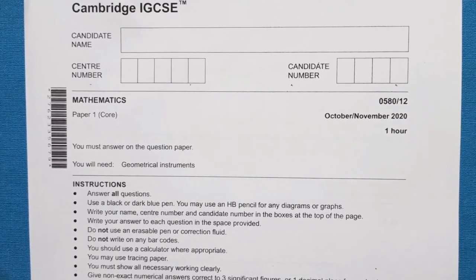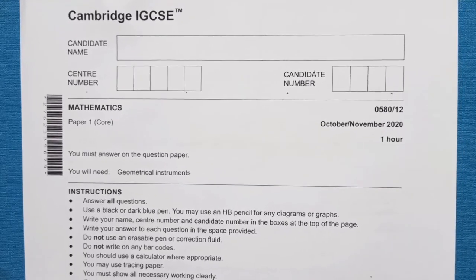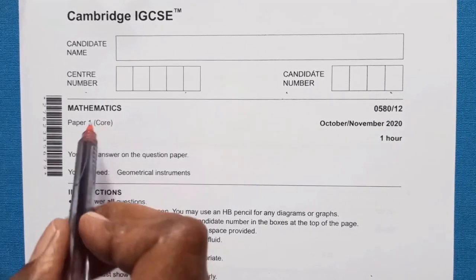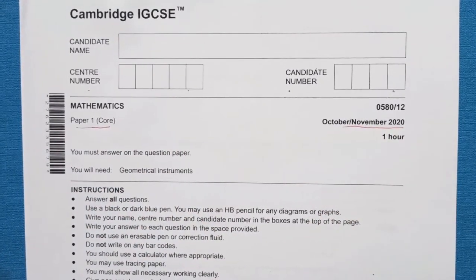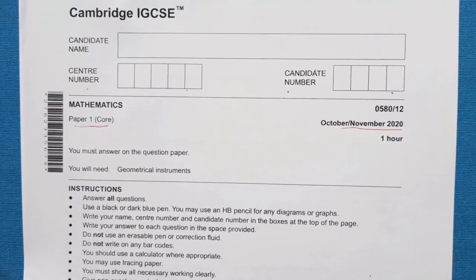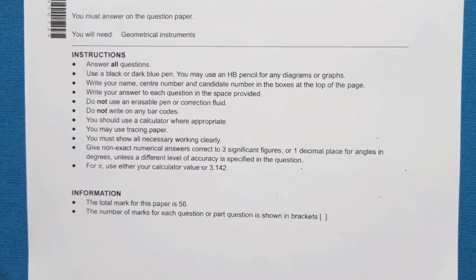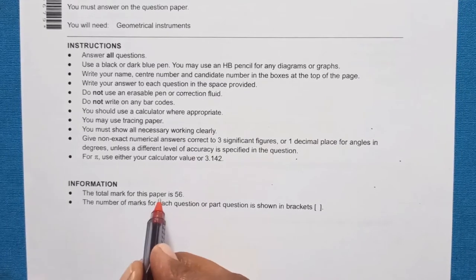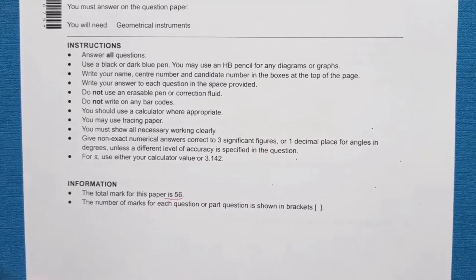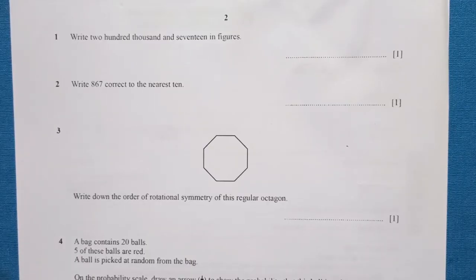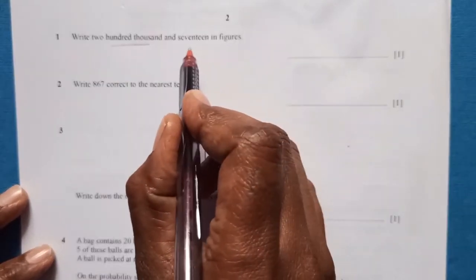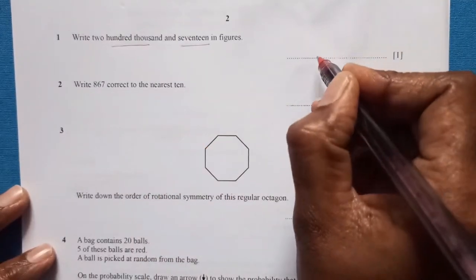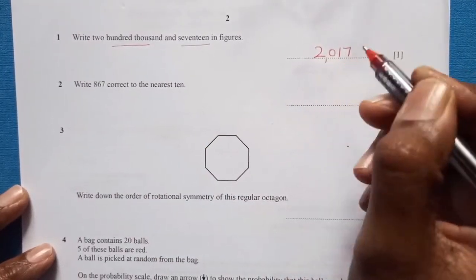Hello everyone, today I'm going to solve this paper of IGCSE for course students. This is Paper 1 of October/November 2020. Time allocated is one hour, and total marks of this paper is 56. So let's start. Question 1: write two thousand and seventeen in figures. Two thousand and seventeen — it's a very simple question.